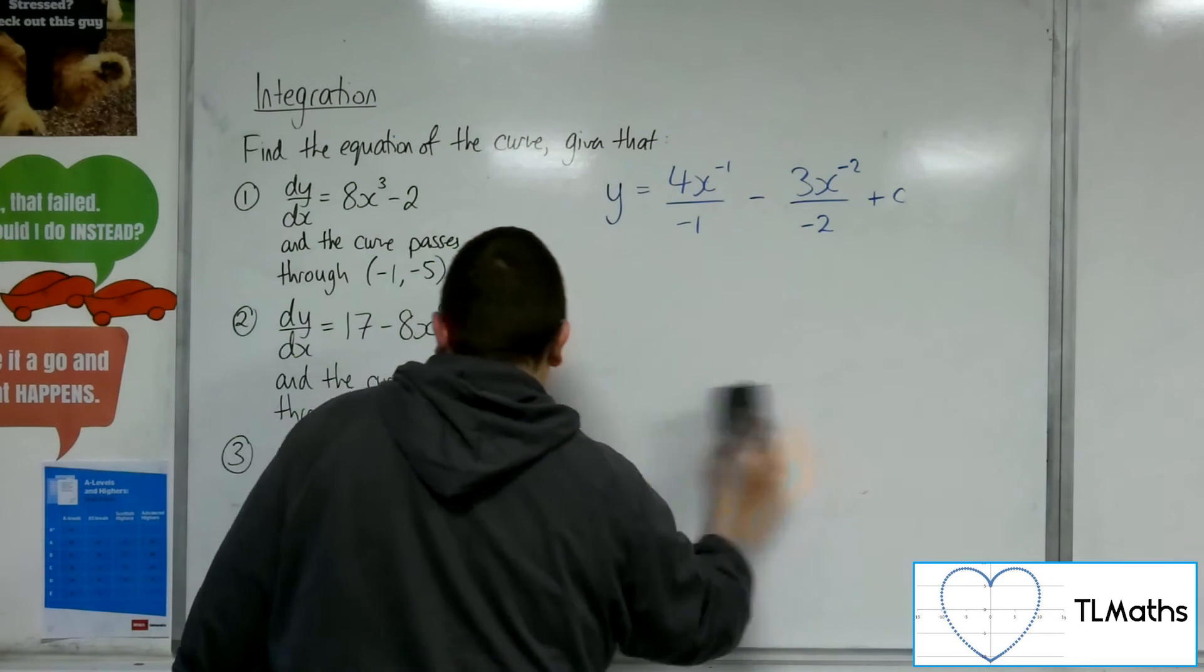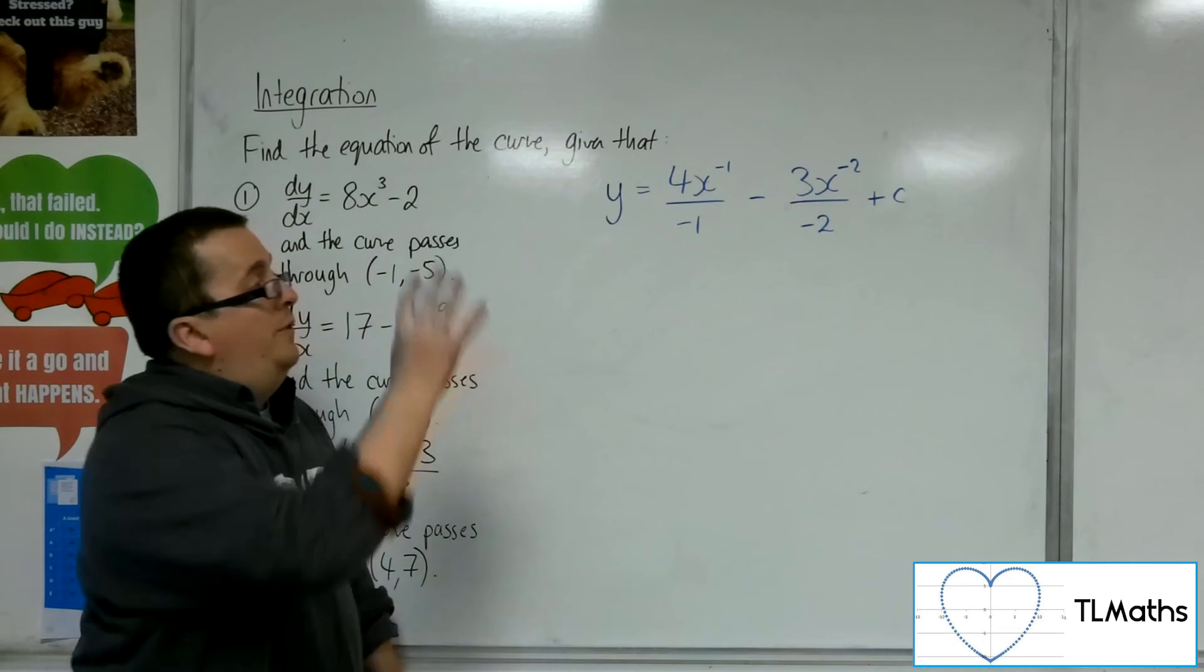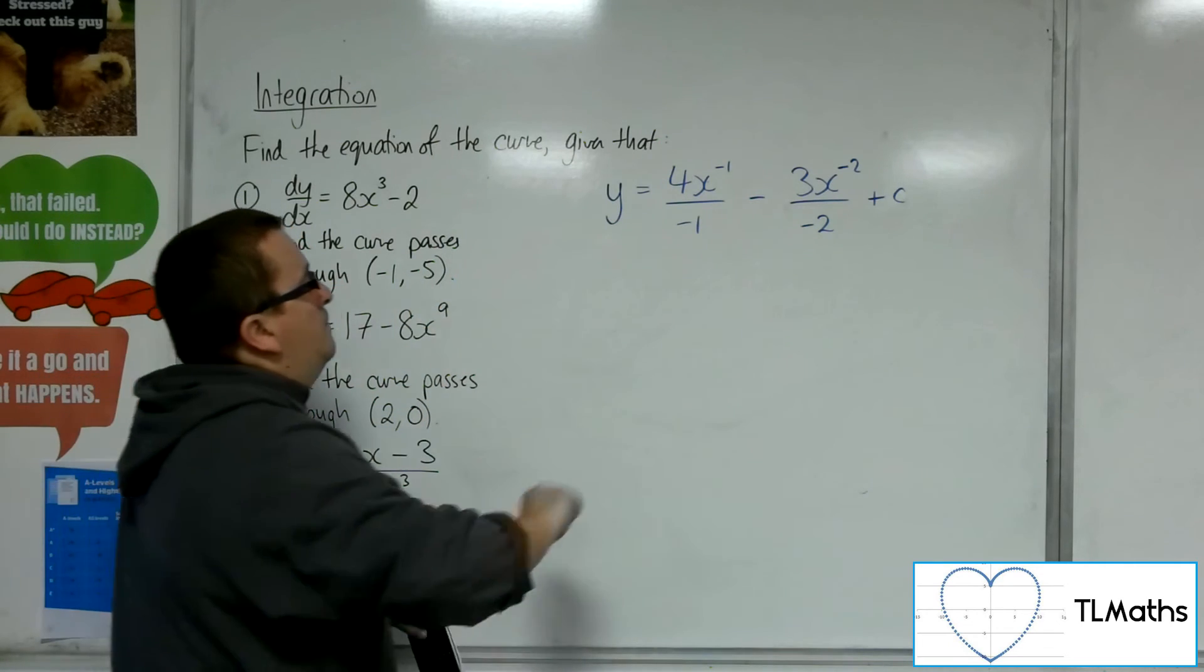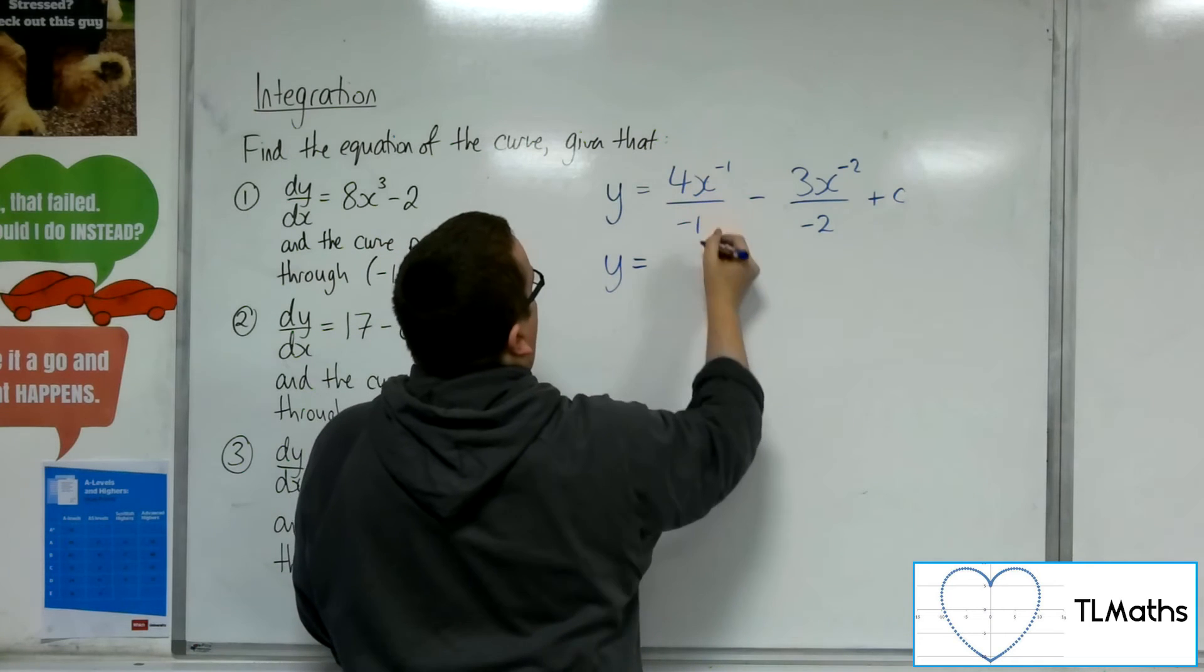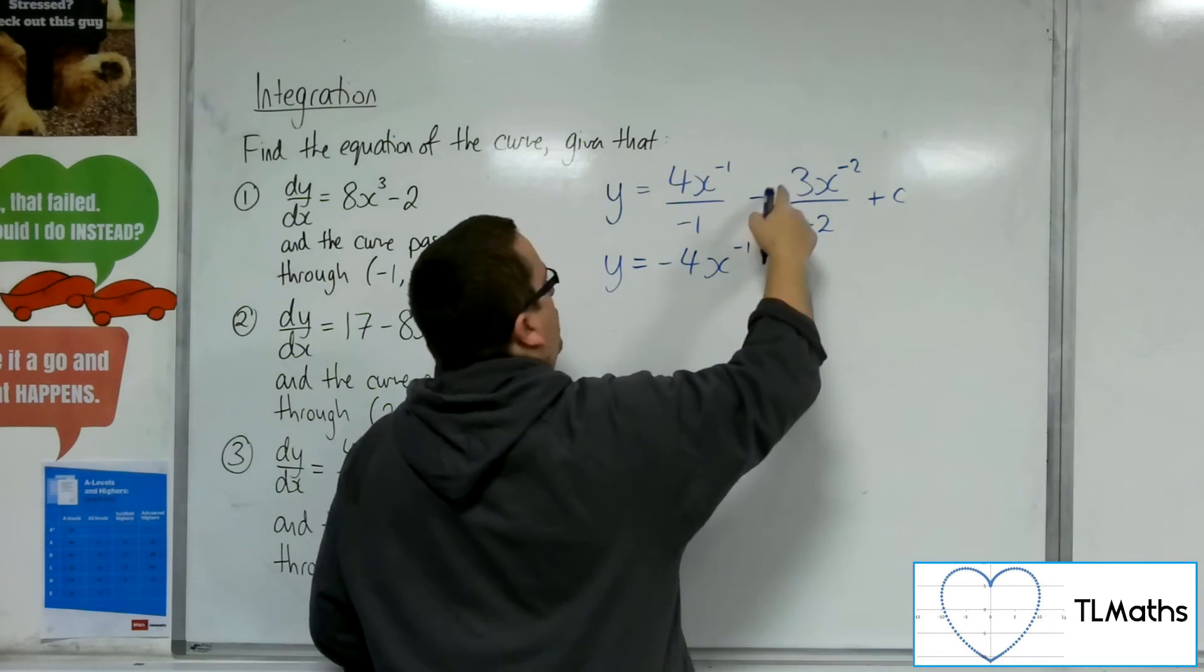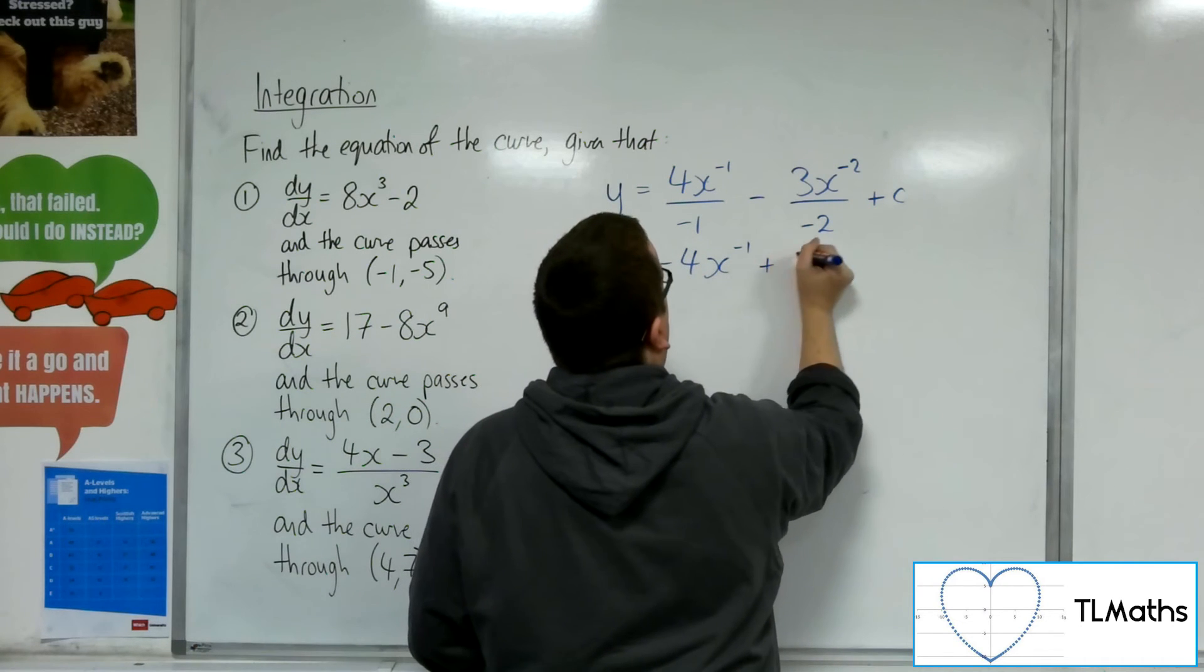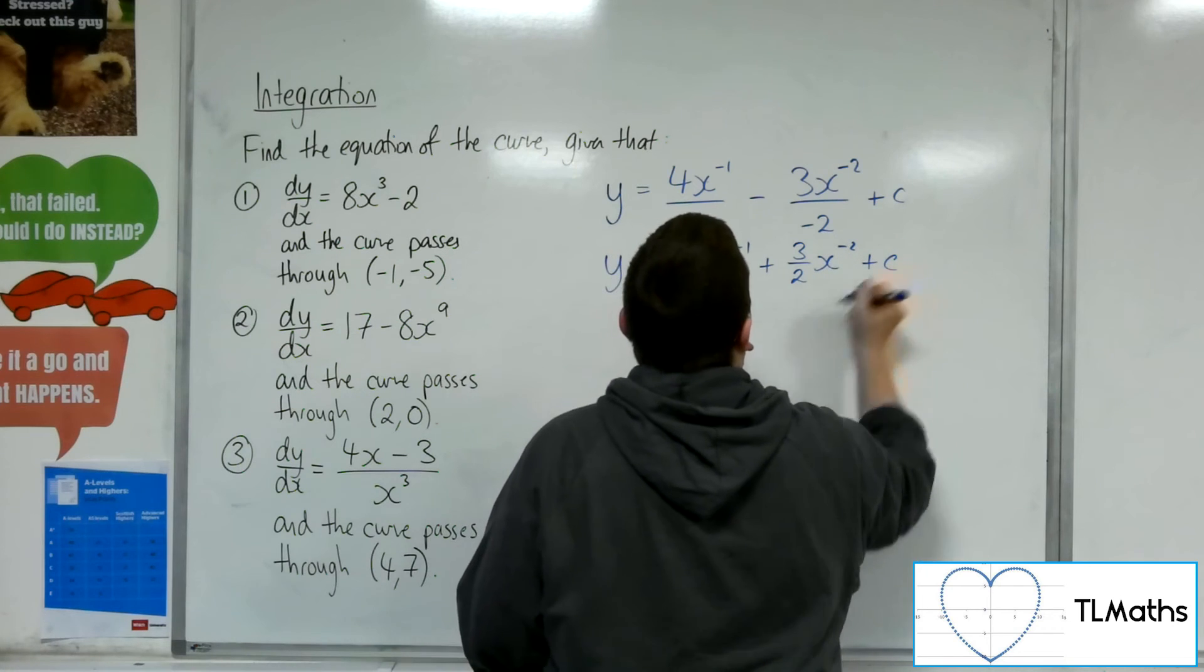Let's just get myself a little bit of space here. So I want to simplify that. I want to make it a little bit nicer to work with. So 4 over -1 is -4. So -4x⁻¹. And then I've got -3 divided by -2. So + (3/2)x⁻² + c.